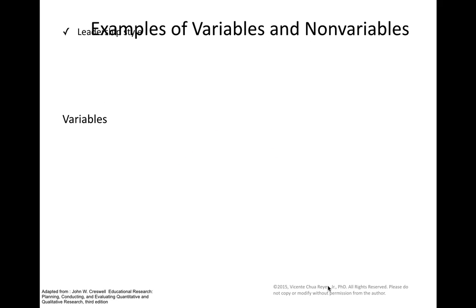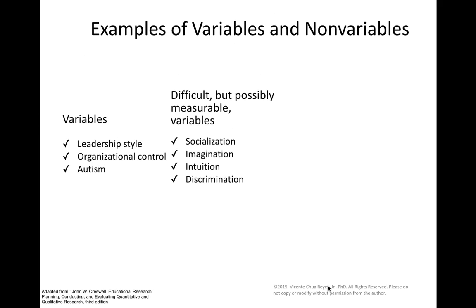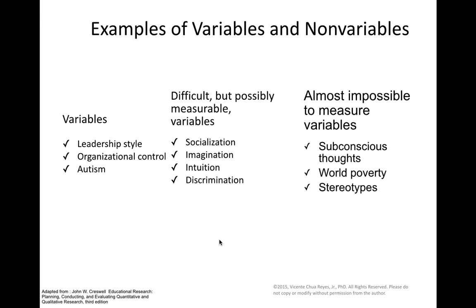Examples of variables include leadership style, organizational control, and autism. We also have some concepts that are difficult but possibly measurable variables, like socialization, imagination, intuition, and discrimination. But notions like subconscious thoughts, world poverty seen from different viewpoints, and stereotypes are almost impossible to measure.